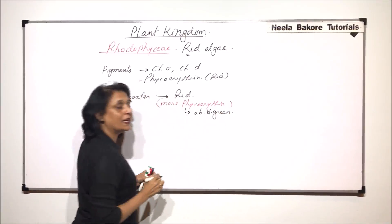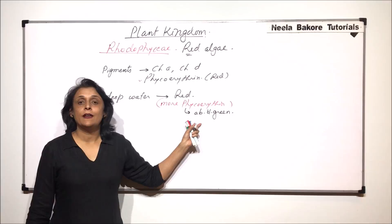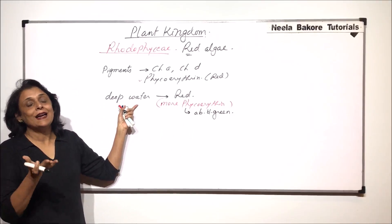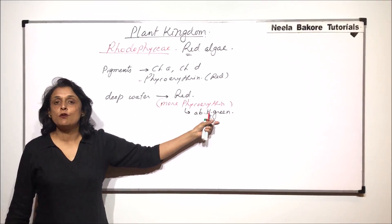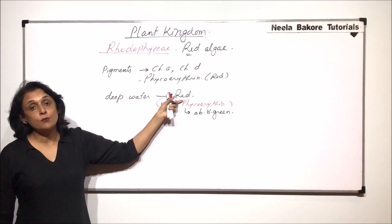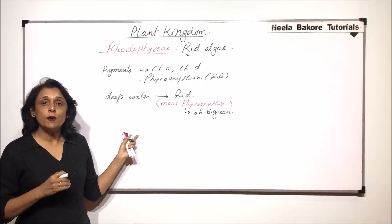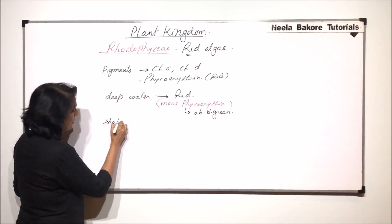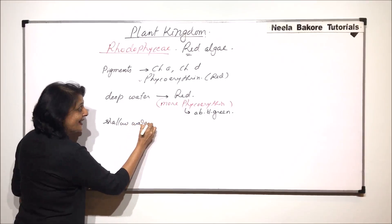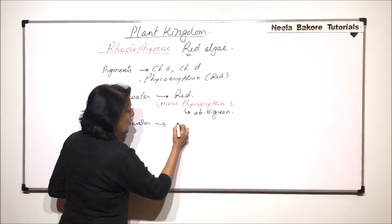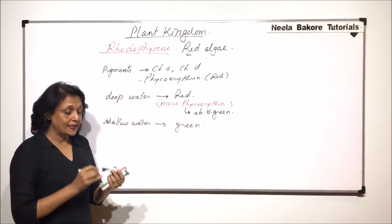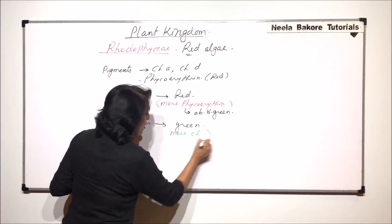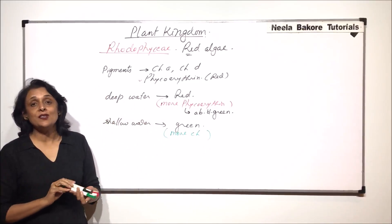So we can write the blue-green wavelength and this blue-green wavelength can penetrate into deeper waters. So if the alga is in deeper water, this is the wavelength which is going to be available for it and the pigment which can absorb this wavelength is red. So in deeper water, the red algae is going to be red. In shallow water, the red algae is going to appear green and this is because of more chlorophyll.